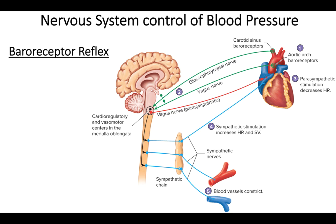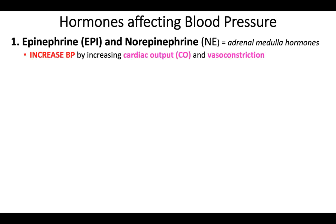When studying the baroreceptor reflex, start at the aorta and carotids. Think about what happens if pressure is too high — follow the path out the parasympathetic division. And what happens if blood pressure is too low — follow that path out the sympathetic division to raise blood pressure. That's how the nervous system helps control blood pressure. Now, how do hormones affect blood pressure? There are a number of different hormones.